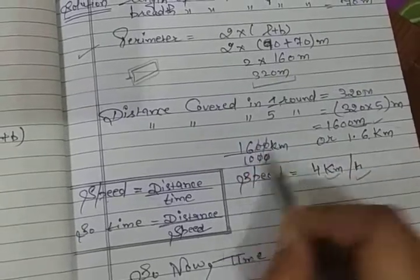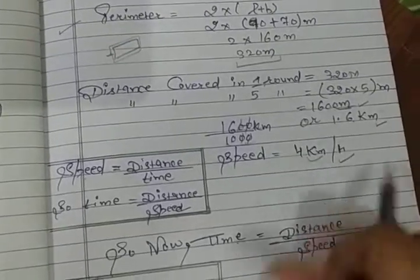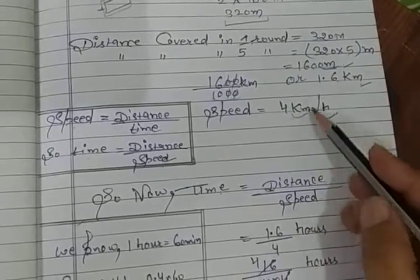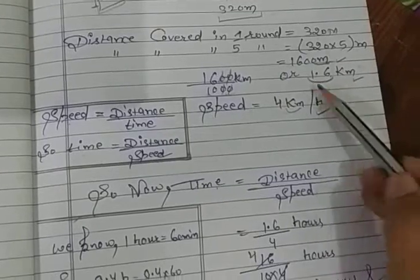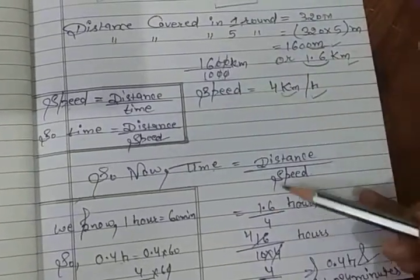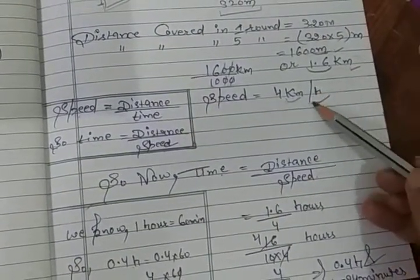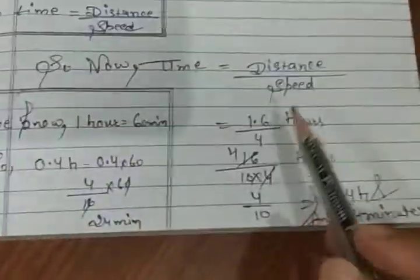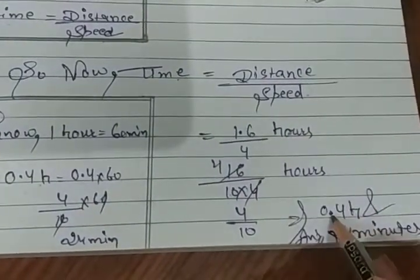Speed you know, and the formula of time is distance over speed. Now we will just put the values. How much distance you have? 1.6. You have put distance and here speed is 4. With km it will reduce, so you will have time in this form and in hours.